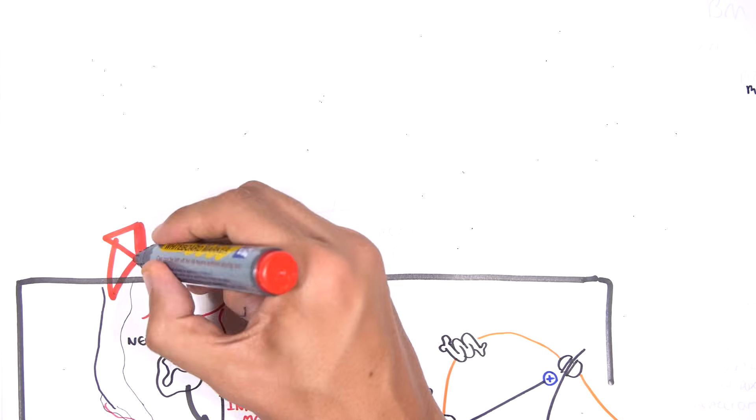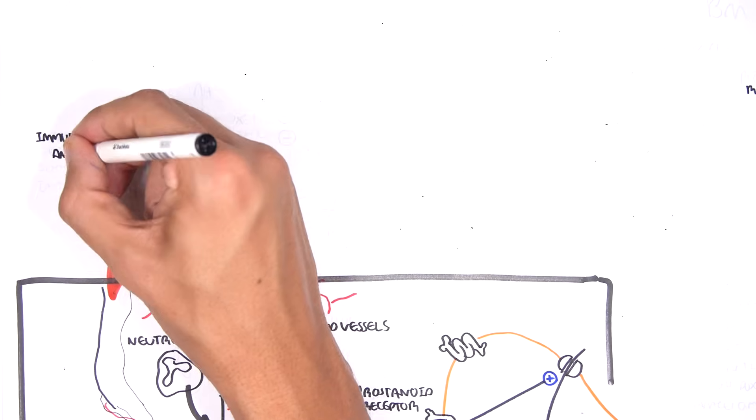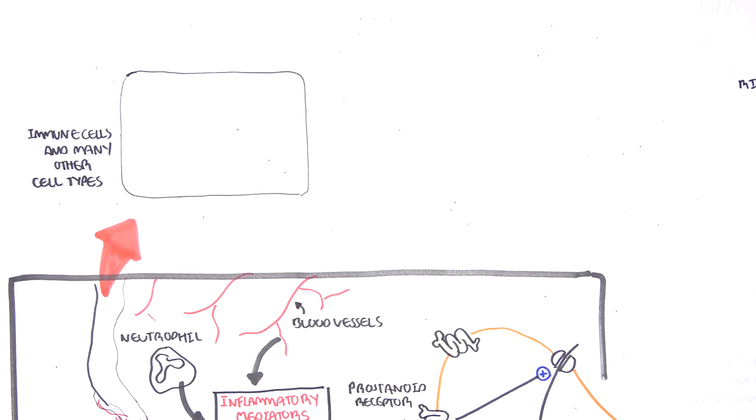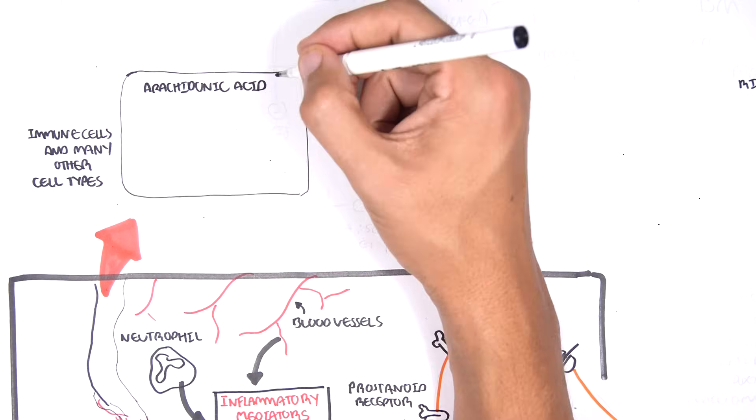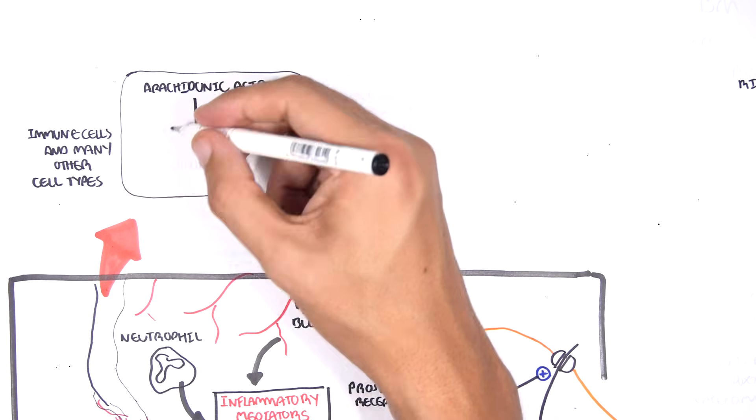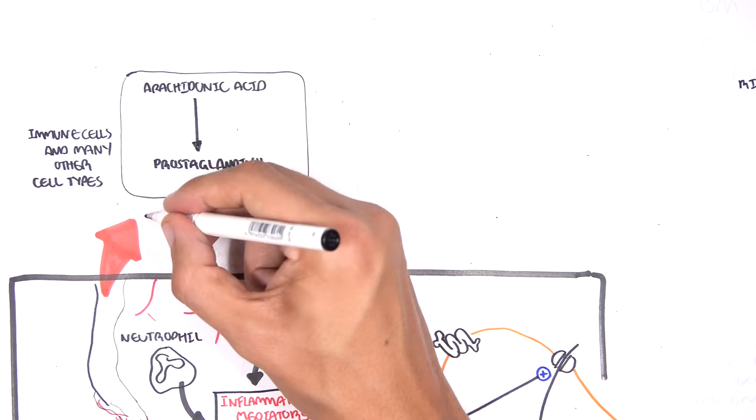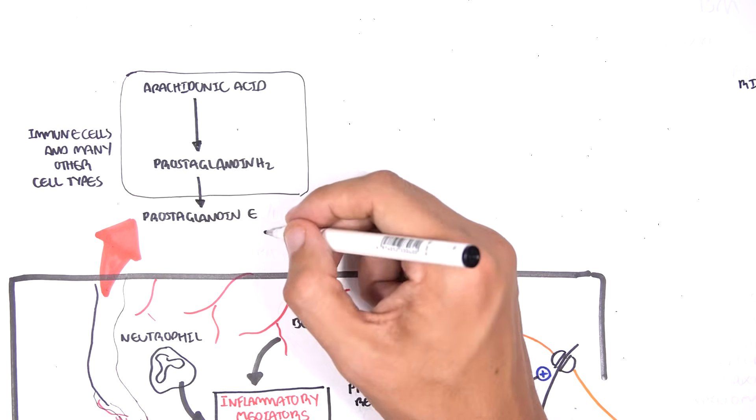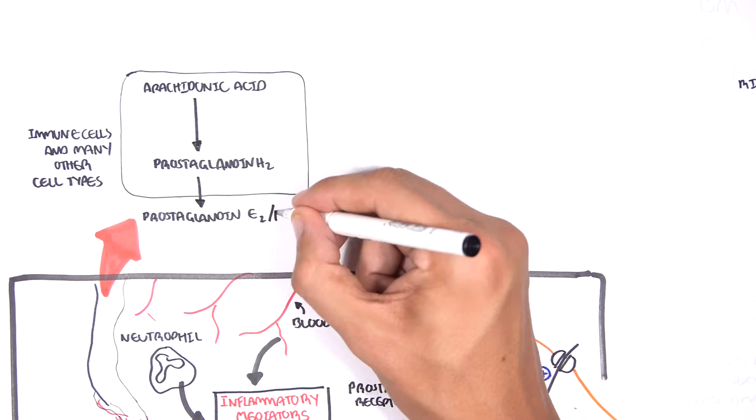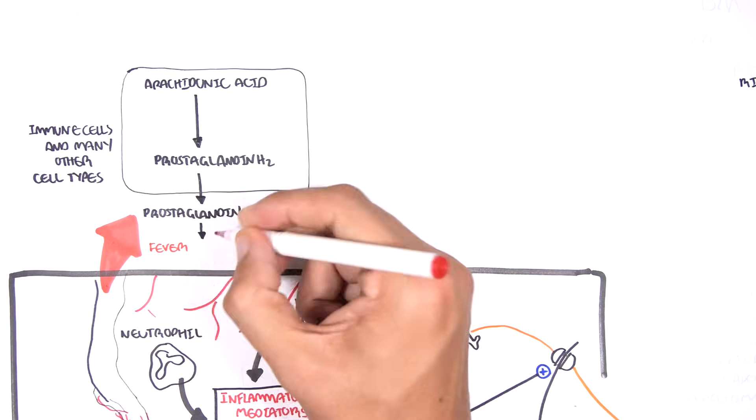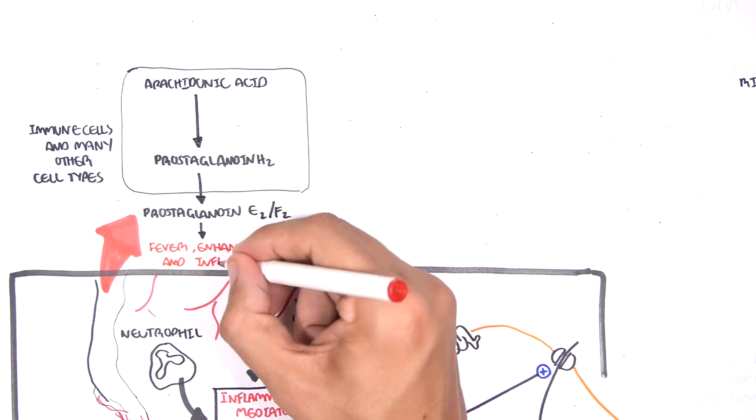During periods of trauma or injury, many cells around the area, in this case immune cells and damaged skin cells, will convert their phospholipids, their cell membrane, into arachidonic acid. Arachidonic acid can be converted to prostaglandin H2. Prostaglandin H2 then becomes prostaglandin E2 and prostaglandin F2. These prostaglandins are the ones that initiate or cause fever, enhance pain, and inflammation.